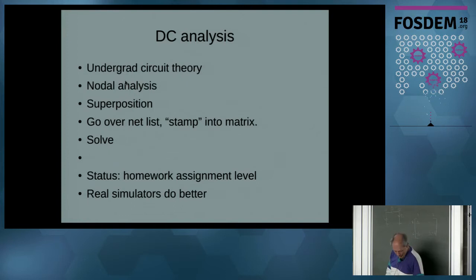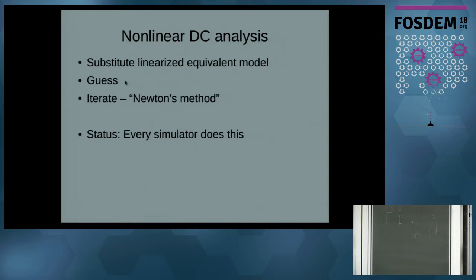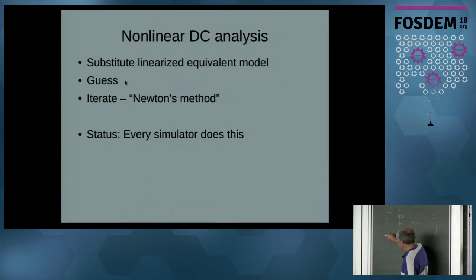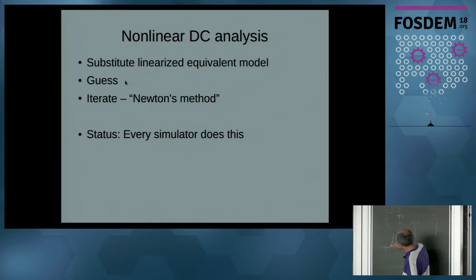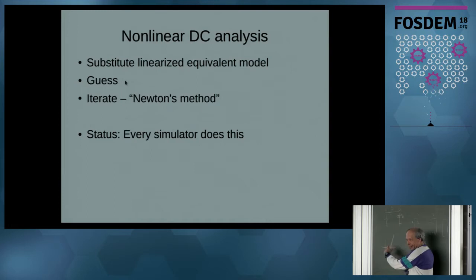Nonlinear DC analysis gets a bit more complicated. What we do is substitute a linearized equivalent. If I have a diode characteristic, I'll essentially make a resistor that forms the tangent line at my guess of the operating point. I'll stick that in the matrix — a resistance and the intercept go on the right side as a constant. Since I guessed the operating point, I might have guessed wrong, so I try again and again.